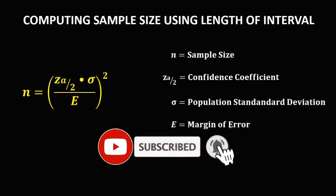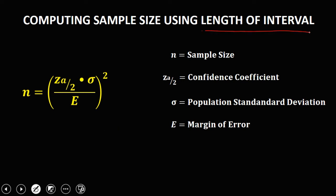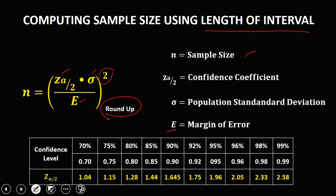So let's have this topic: Computing Sample Size Using Length of Interval. We have this formula for solving the sample size — it's the square of the confidence coefficient times the population standard deviation, divided by the margin of error. Take note: for the sample size, always round up. We also have the different confidence coefficients with respect to the given confidence level.